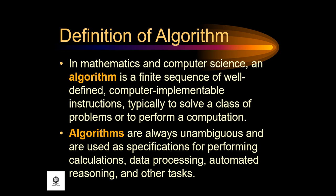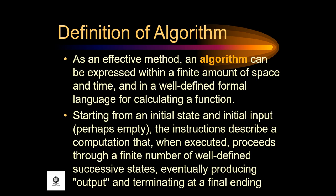In mathematics and computer science, an algorithm is a finite sequence of well-defined computer-implementable instructions, typically to solve a class of problems or to perform a computation. Algorithms are always unambiguous and are used as specifications for performing calculations, data processing, automated reasoning, and other tasks. As an effective method, an algorithm can be expressed within a finite amount of space and time and in a well-defined formal language for calculating a function.